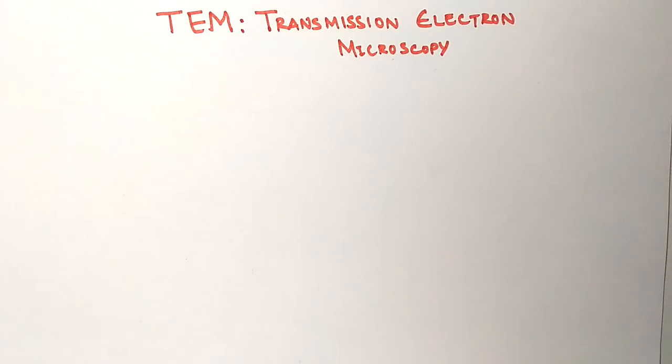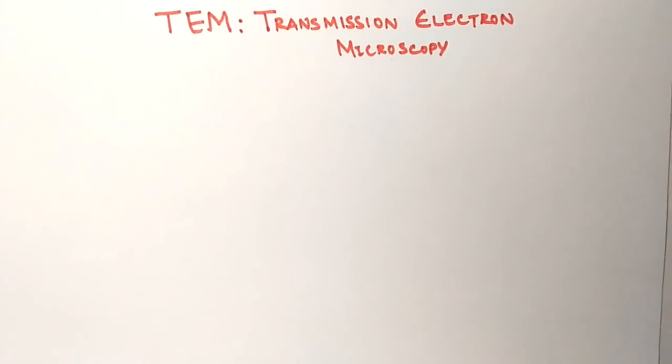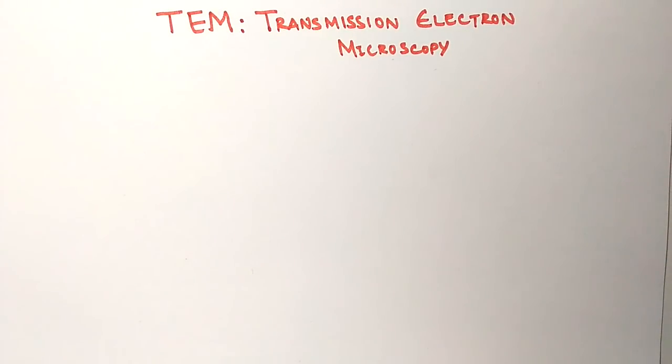We have two types of electron microscopy. First is TEM, transmission electron microscopy, which creates 2D images. Another is SEM, scanning electron microscopy, which creates 3D images. Now we will discuss TEM.